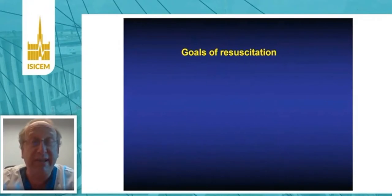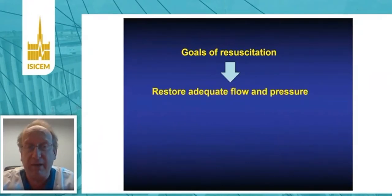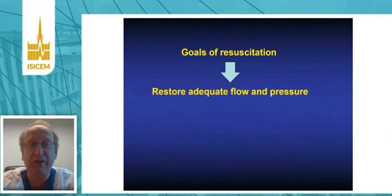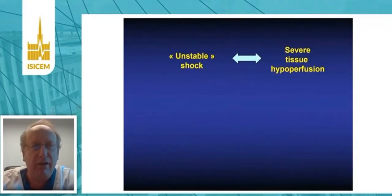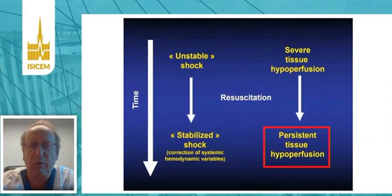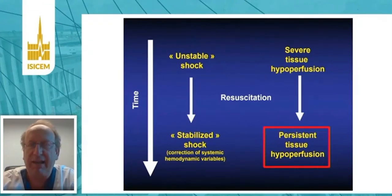The goal for resuscitation is to restore adequate flow and pressure — the idea being to restore and/or improve tissue perfusion. We all agree that in established shock there is severe tissue hypoperfusion. The problem is that after resuscitation, when the patient reaches a stabilized shock by correction of systemic hemodynamic variables, in some patients there is persistence of tissue hypoperfusion.